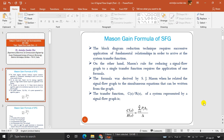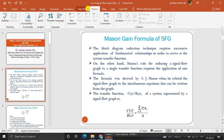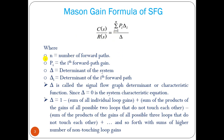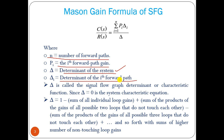Now let me just remind you the formula of Mason's gain formula. The Mason's gain formula that we use for signal flow graph, which is derived by S.J. Mason. The transfer function is nothing but summation of P_i delta_i by delta. N is the number of forward paths, P_i is the i-th forward path gain, and delta is the determinant of the system. If delta equals zero, that becomes the characteristic equation from which we can find out pole locations and comment on the stability of the system.